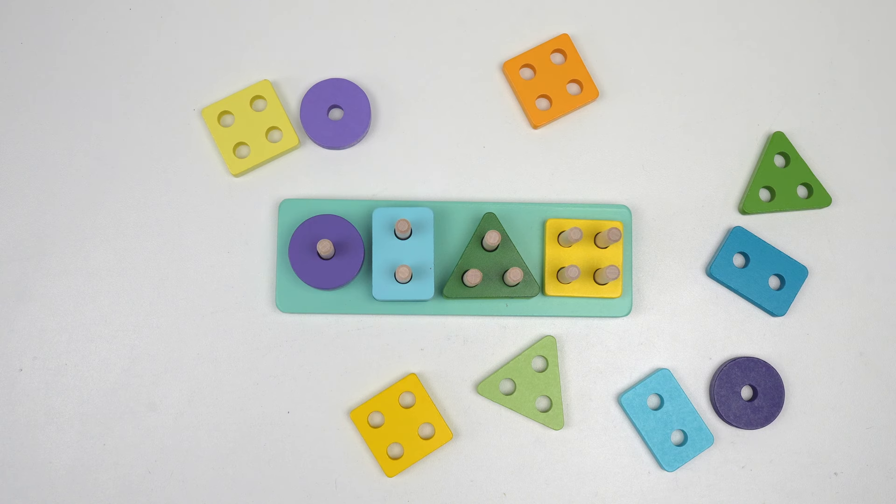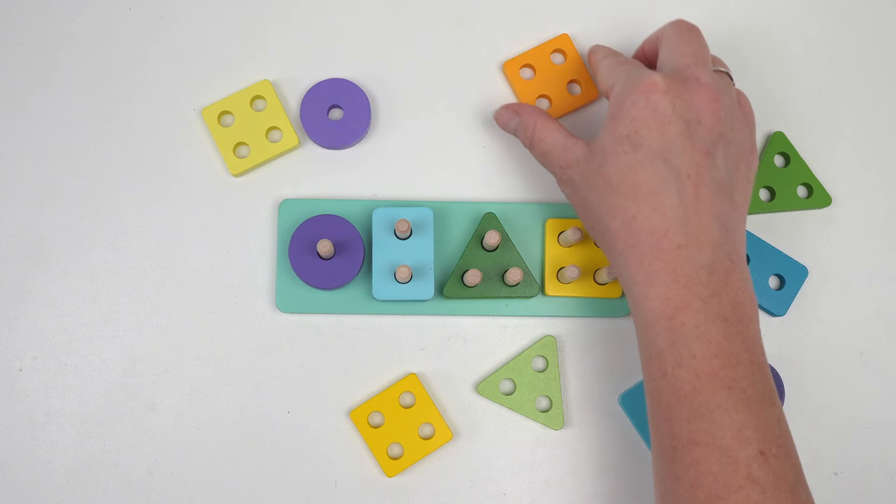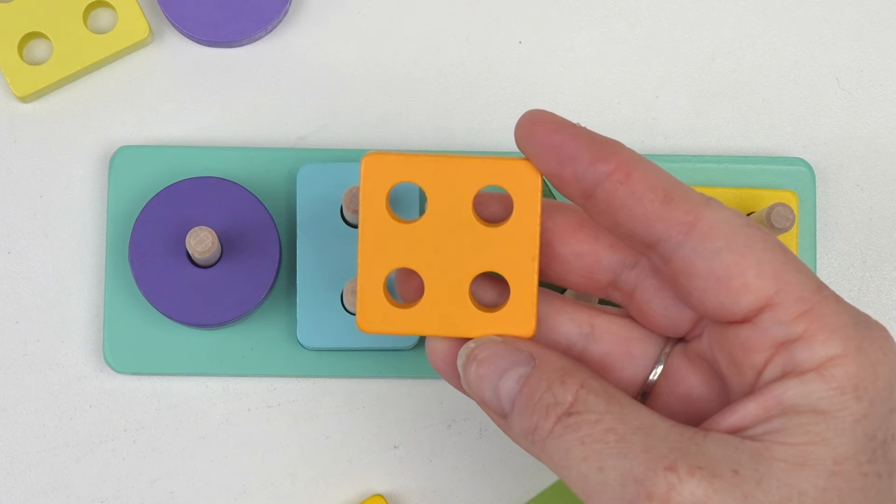Can you find a square that is not yellow? That's right! This square is orange.